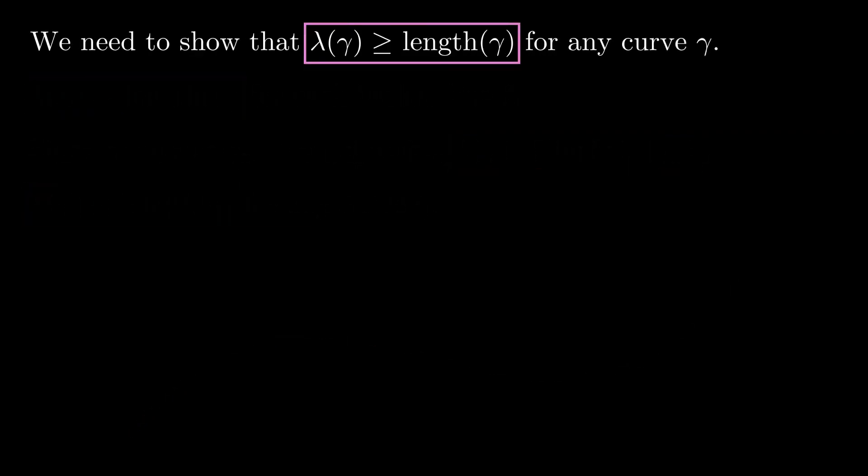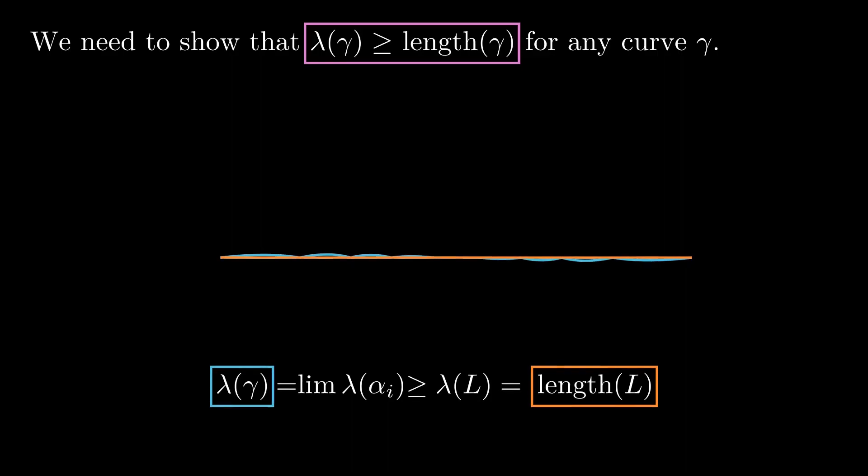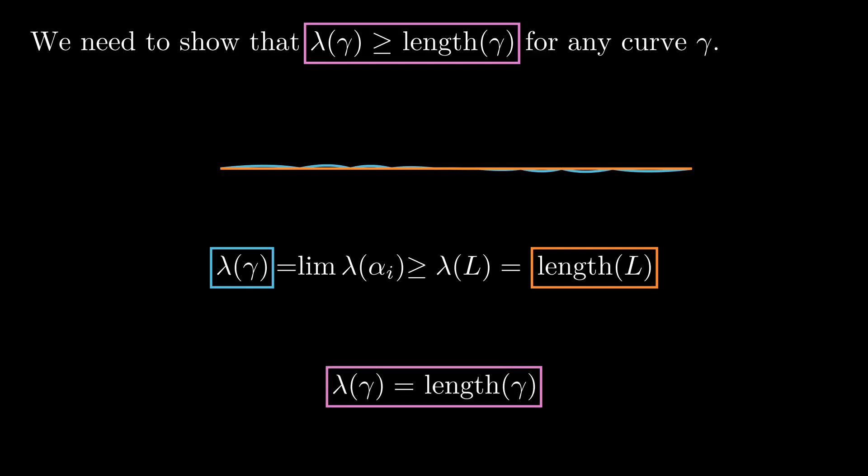Before we prove the other inequality, we must notice that by the concatenation property and by the isometry invariance property, we are allowed to shatter the curve into pieces, rearrange them as we want, and the value of λ will not change. With this property, for any partition of the curve, we can break it into finitely many pieces and reassemble it along a straight line. By doing this with finer and finer partitions, one obtains a sequence of curves αᵢ with the same λ value as the original one, but converging pointwise to a straight segment L, whose length equals the length of the original curve. Then by the limit property, λ(γ) is at least its length. This finishes the proof of the theorem.